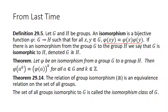We also had a theorem proved in an activity: let phi be an isomorphism from group G to group H. Then phi of A to the K equals phi of A quantity raised to the K, for all A in G and all K in the integers. This works for K equals 0 (the identity maps to the identity) and for negatives as well. Additionally, the relation of group isomorphism is an equivalence relation on the set of all groups, partitioning all groups into their isomorphism classes. The set of all groups isomorphic to G is called the isomorphism class of G.